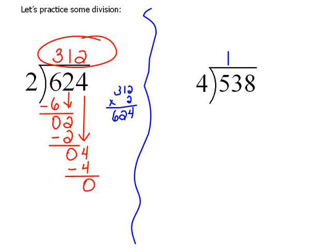Well, 1 times 4 will give us a 4. And that's as close as we can get to 5. It's not an exact, but it's as close as we can get. And then we subtract. So, 5 minus 4 would be 1. Now, we drop our next digit, which is a 3. And we begin again.